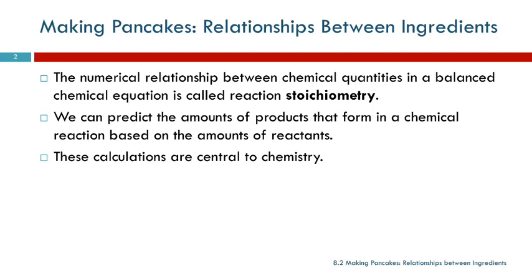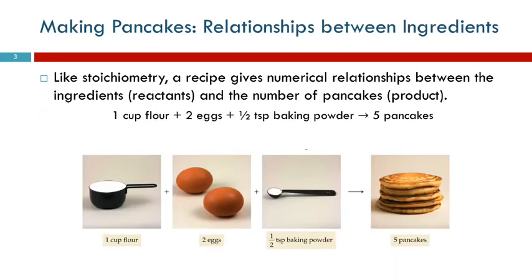If you can't recognize a redox reaction, you can pass the class. If you can't do stoichiometry problems to save your life, you're not going to pass the class — and you shouldn't pass the class. So we're going to start by talking about something more friendly than chemicals: we're going to talk about pancakes.